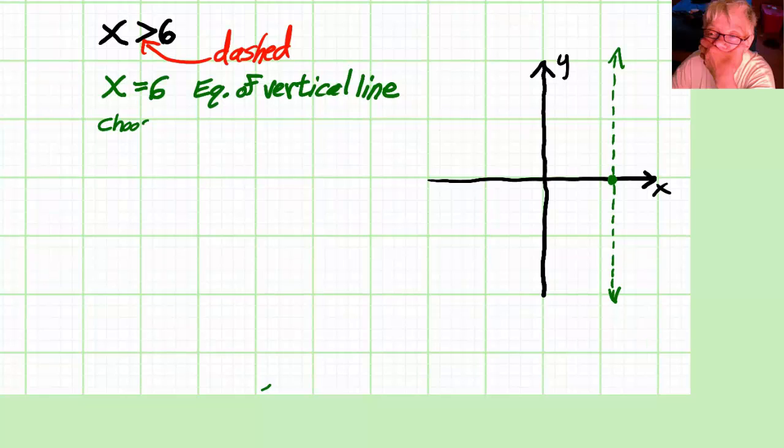Now we're going to have to choose a test point. And you know what test point I'm going to choose. I'm going to choose my favorite test point because I can, because the line is not going through it. I'm going to choose 0, 0.